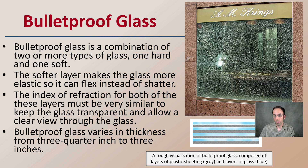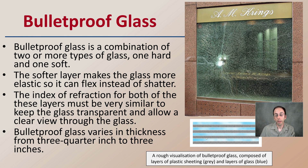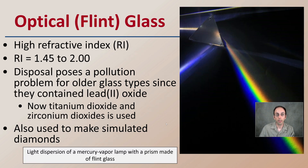Here's a rough depiction of bulletproof glass composed of layers of plastic sheeting — shown in gray — and then layers of actual glass shown in blue. Depending on how many layers there are, it will resist varying calibers or forces of impact from a bullet.